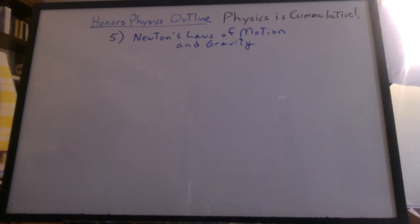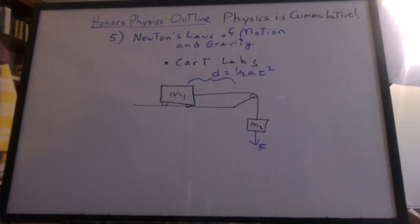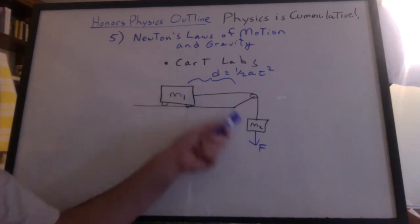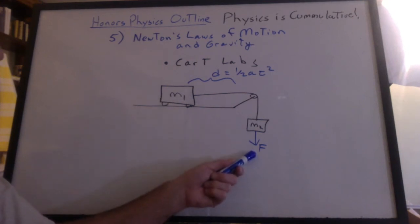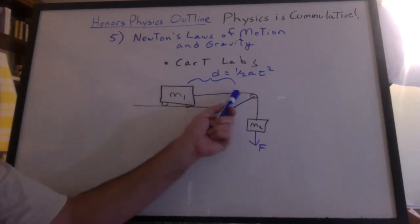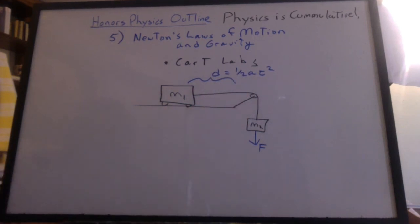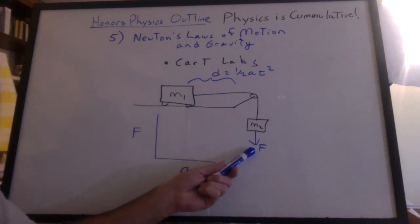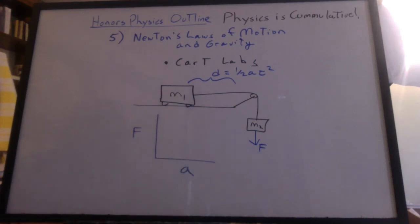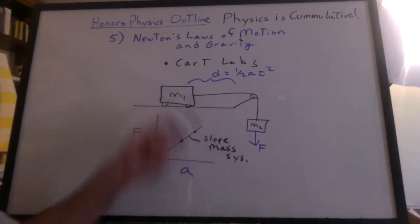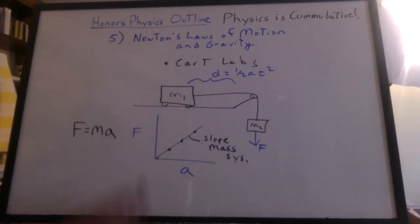In chapter five, we learned about Newton's laws of motion and gravity. We did a lot of labs involving the carts. We weighed the mass pulling the cart forward, so we had a force. We also measured the distance traveled and the time, and we were able to calculate the acceleration. We increased the force and found the acceleration. We got a linear relationship. We found the slope to be the mass of the system. And this is how we discovered F equals MA.